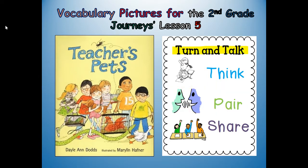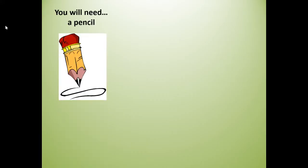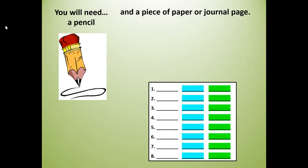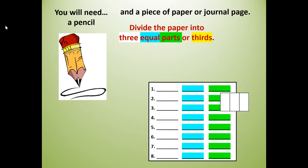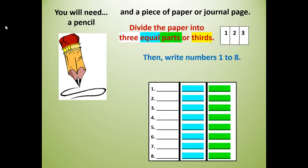Before this lesson we're going to turn and talk — that means I'm going to ask you a question, you're going to think about your answer, then pair up with a partner. If you don't have a partner at home you can be my virtual partner, and then you're going to share out your answer in a complete sentence or sentences. For this lesson you will need a pencil and a piece of paper or journal page, divided into three equal parts, and you're going to write your numbers one to eight — for each number you're going to write a vocabulary word.